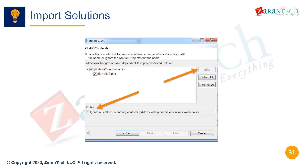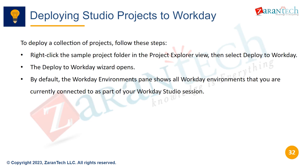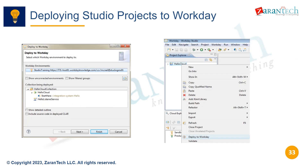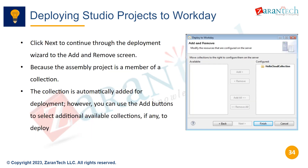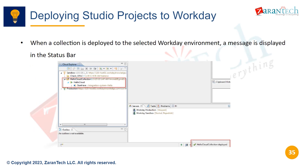This diagram summarizes the process of importing a CLAR into your Workday Studio workspace. To deploy a collection to Workday, right-click the collection folder and select Deploy to Workday — the deploy wizard opens. Select the target Workday environment. The deploy wizard shows connected environments; select the target environment and click Next. On the Add/Remove screen, the collection is added automatically; you can add more collections if needed. Click Next to review, then finish deploying. Once deployed, a message is displayed in the Studio status bar.